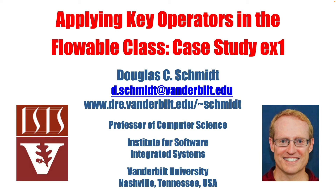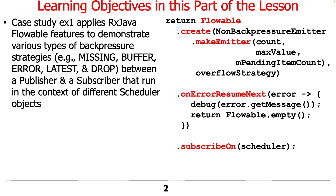We're now going to demonstrate how to apply some of the key operators in the Flowable class in the context of case study EX1. This particular case study shows how to use various RxJava Flowable features dealing with backpressure strategies - specifically the missing, buffer, error, latest, and drop strategies - where a publisher generates data at a rate faster than a subscriber can keep up with.